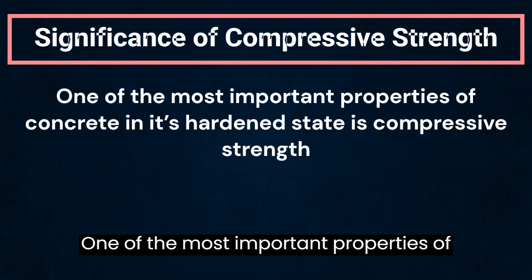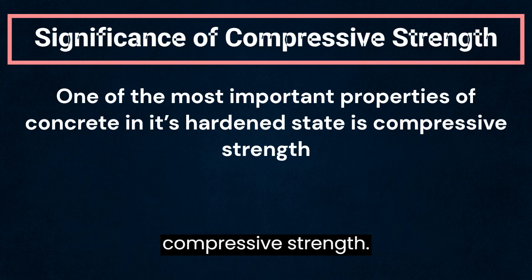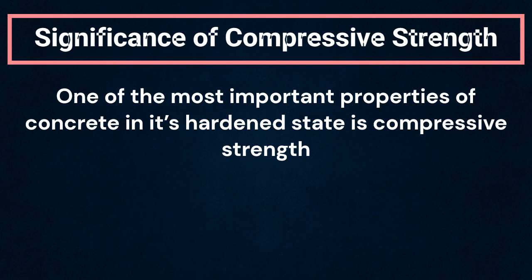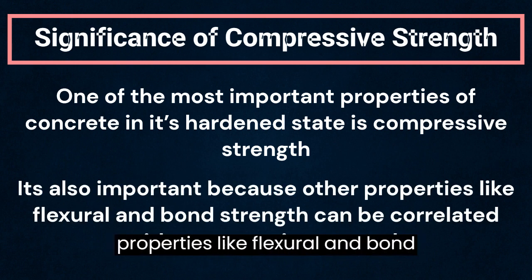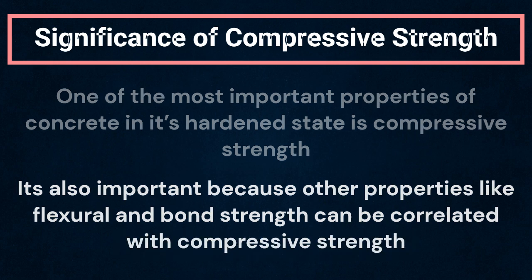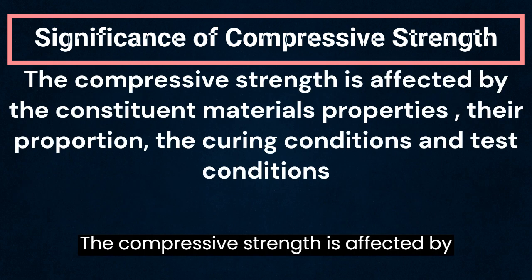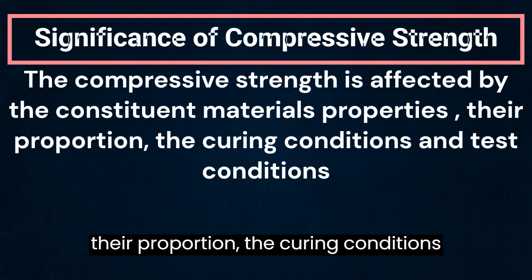One of the most important properties of concrete in its hardened state is compressive strength. It's also important because other properties like flexural and bond strength can be correlated with compressive strength. The compressive strength is affected by the constituent materials properties, their proportion, and the curing conditions.